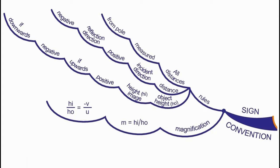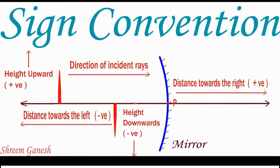Rule 1: All the distances should be measured from pole.